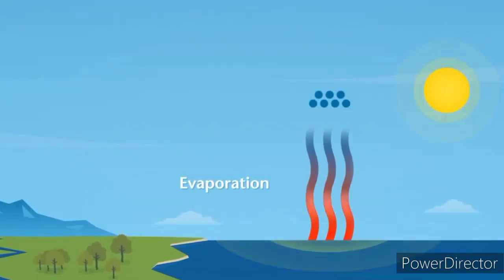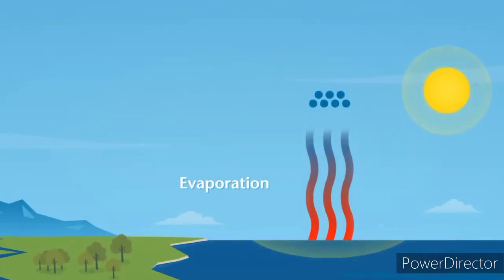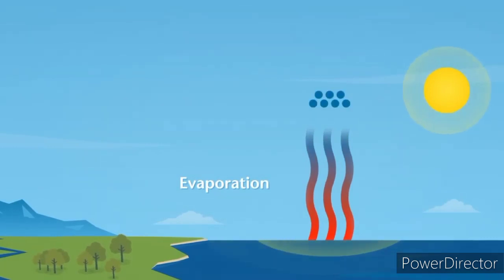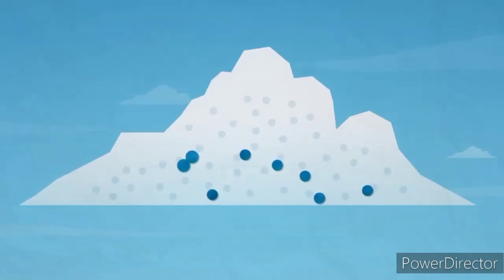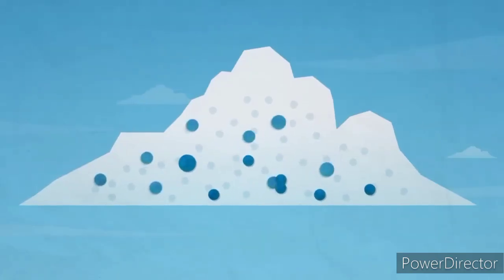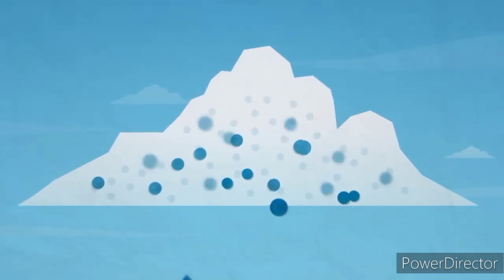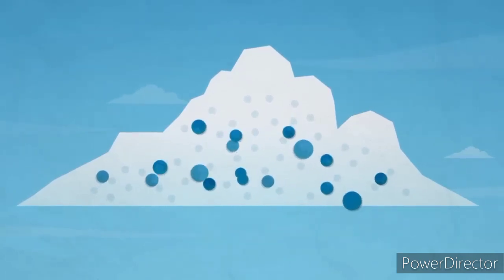When this water vapor rises up into the sky, it cools down and turns into tiny droplets of water. This change is called condensation. Clouds are formed by these tiny droplets of water.